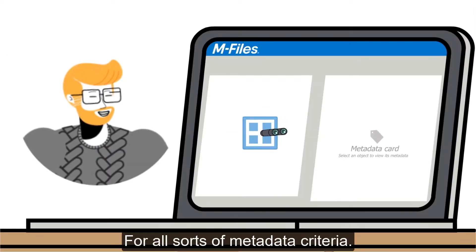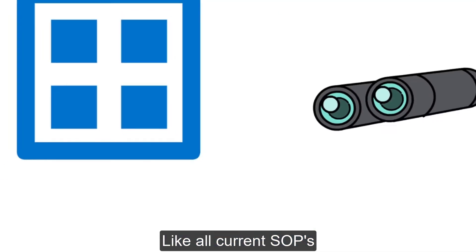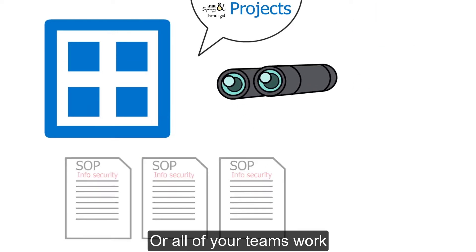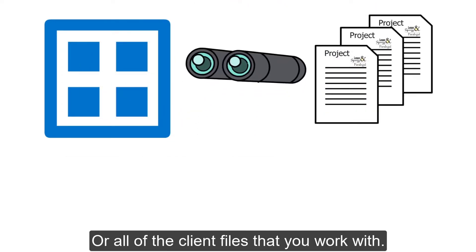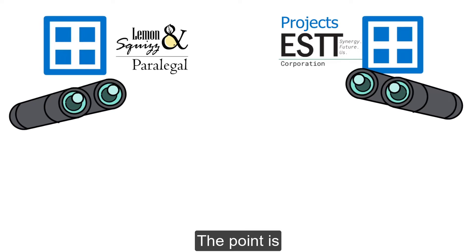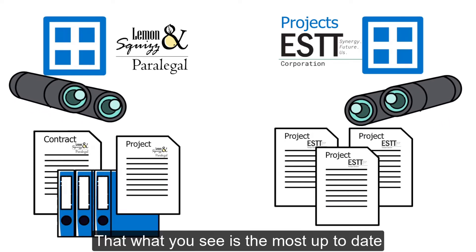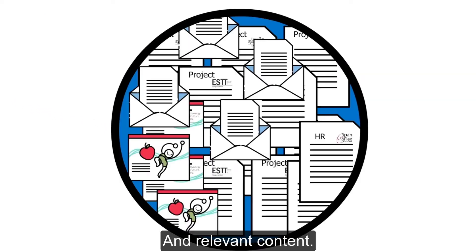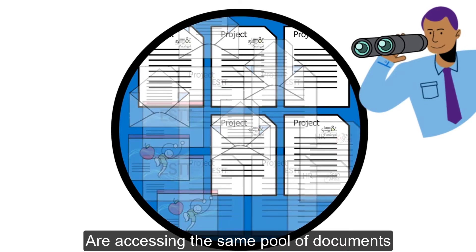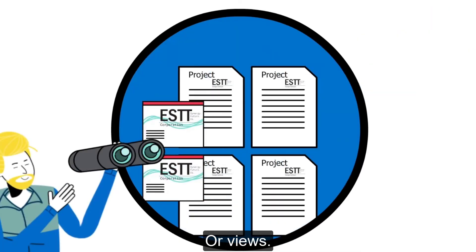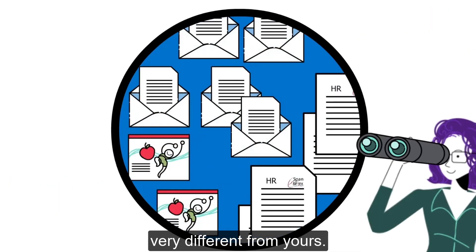You can create a view for all sorts of metadata criteria — like all current SOPs relating to a certain department, or all of your team's work related to a particular project, or all of the client files that you work with. The point is that you can make views for whatever is relevant to you, and rest assured that what you see is the most up-to-date and relevant content. You and your colleagues are accessing the same pool of documents, but only through different lenses or views — your colleagues' views might be very different from yours.